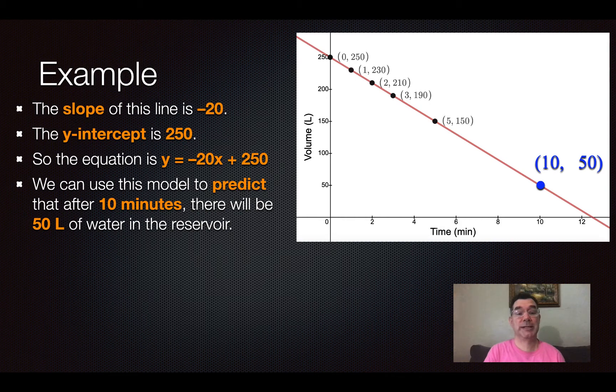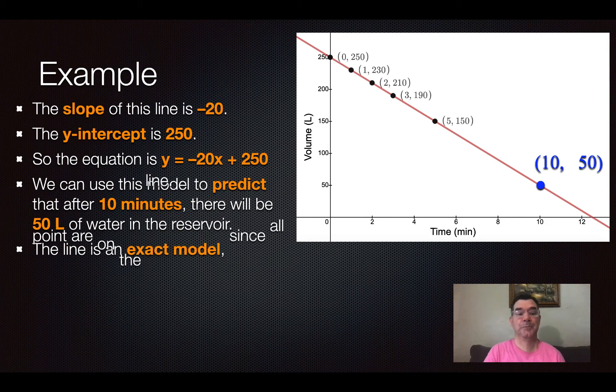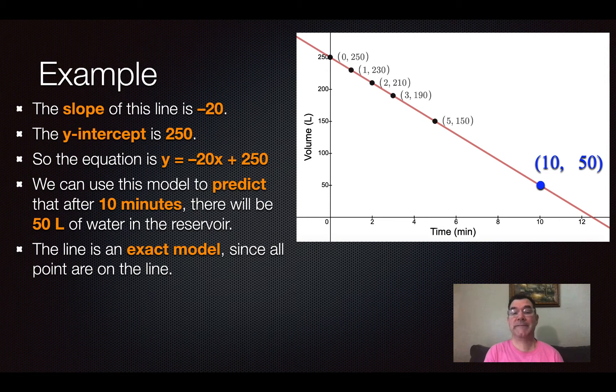We can use this model to predict that after 10 minutes, there will be 50 liters of water in the reservoir. Now the line is an exact model because all of the points are perfectly fit on that line. So it's a good model to use.